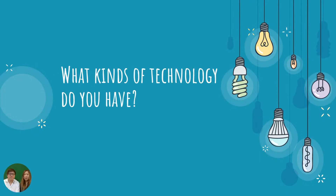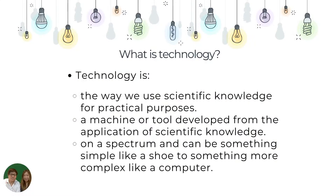So what kinds of technology do you have? Technology is the way we use scientific knowledge for practical purposes. Technology is a machine or tool developed from the application of scientific knowledge. Technology is on a spectrum — it can be something simple like a shoe or something more complex like a computer.